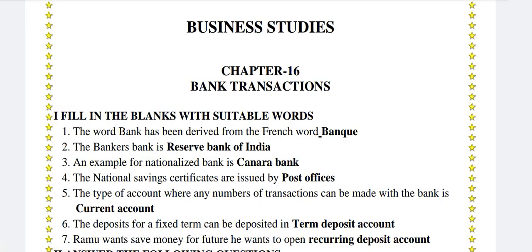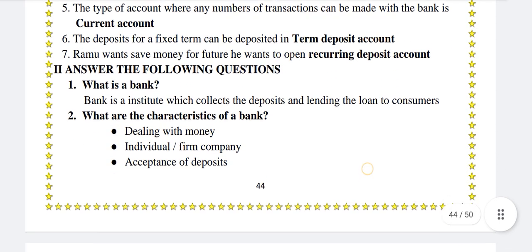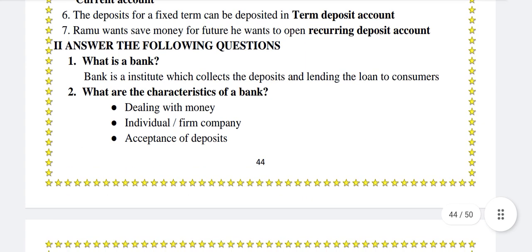The type of account where any number of transactions can be made with the bank is the Current Account. Deposits for a fixed term can be deposited in a Term Deposit Account. Ramu wants to save money for the future; he wants to open a Recurring Deposit Account.